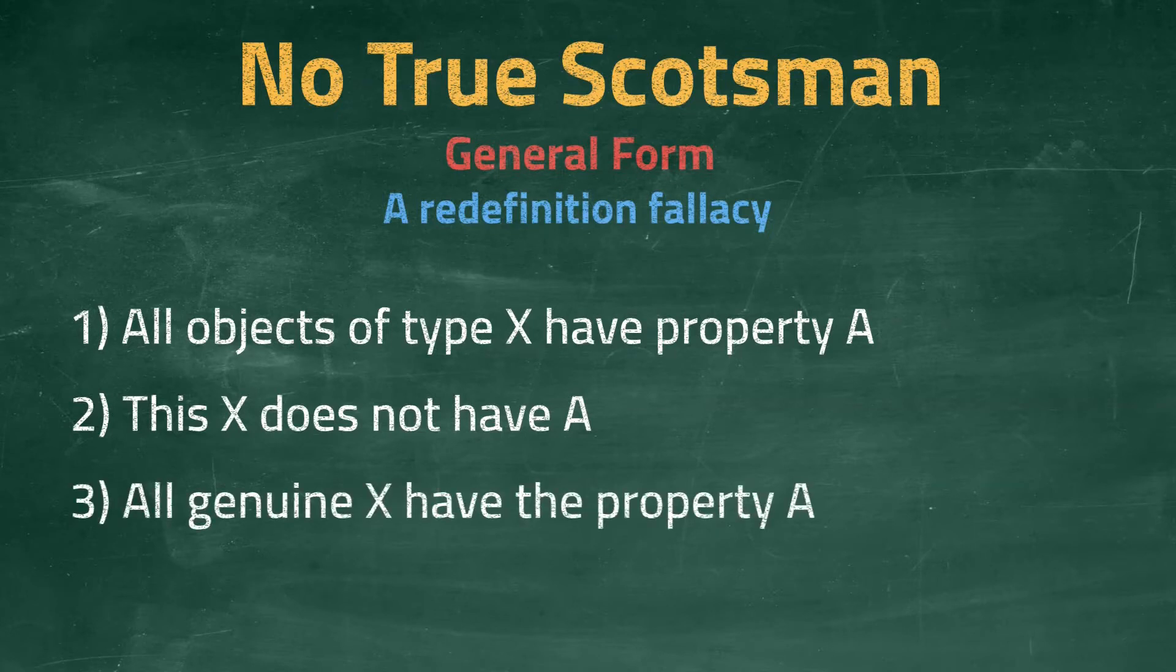The first person then responds with, all genuine X have the property A. This last statement is the fallacy. They have modified X with the adjective genuine to counter the previous statement. Other similar adjectives could also be used. True, fake, real, for example.